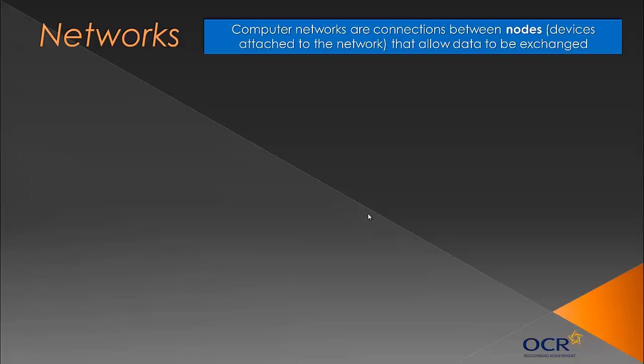Let's define what a network is. Computer networks are connections between nodes. The specification doesn't specifically mention the word 'node,' but in computing, nodes are devices attached to the network — devices that can have data sent to them and can send data away. Basically, networks are connections between devices that allow data to be exchanged.